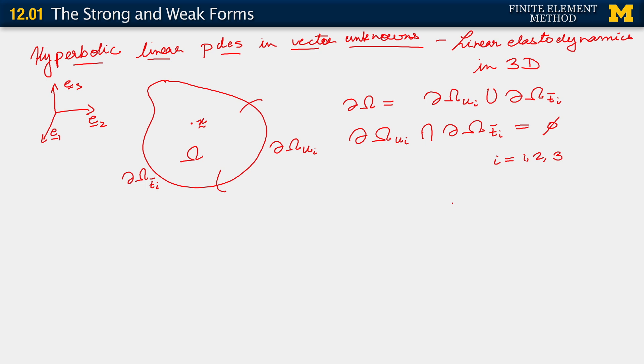I'm going to straight away put down the strong form of the problem. Given data: U_gi, t bar i, fi. In addition, we need some more data now. We need also other functions which I'm going to denote as u_i naught and v_i naught. We're going to use them for initial conditions. Given all of this,